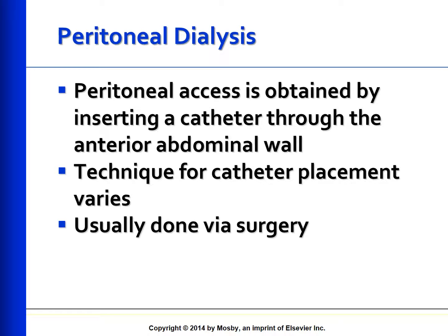In peritoneal dialysis, peritoneal access is obtained by inserting a catheter through the anterior abdominal wall. The catheter is about 60 cm long and has one or two dark round cuffs on its subcutaneous and peritoneal portions. The cuffs act as anchors and prevent the migration of microorganisms down the shaft from the skin. Within a few weeks, fibrous tissue grows into the Dacron cuff, holding the catheter in place and preventing bacterial penetration into the peritoneal cavity. The catheter has many perforations along its distal end to allow fluid to flow in and out.